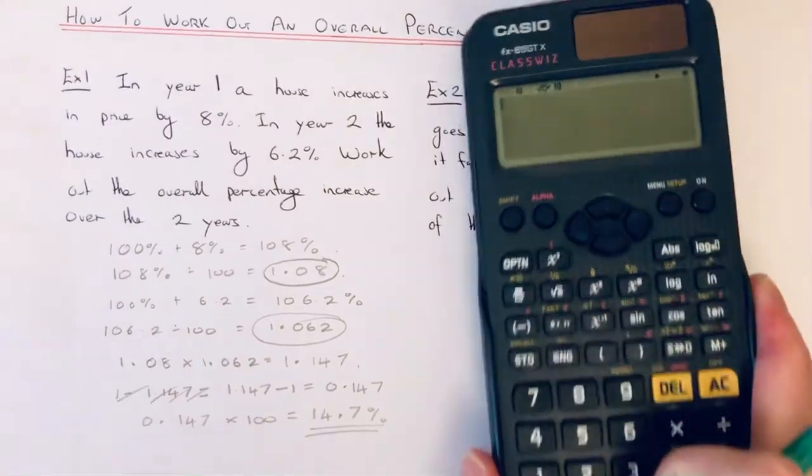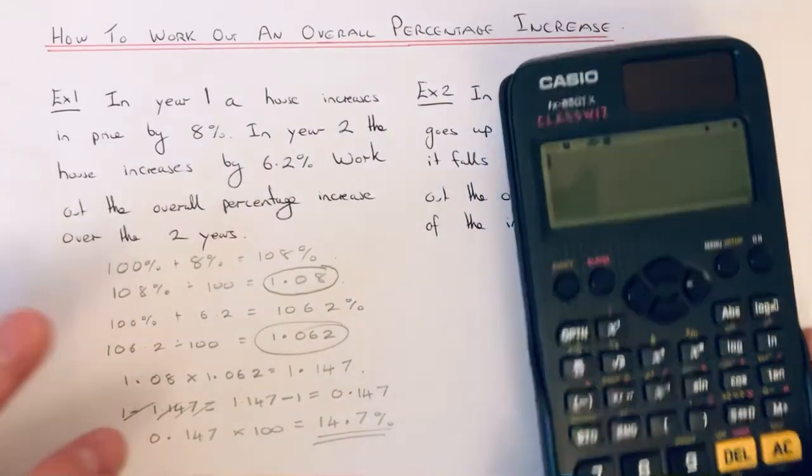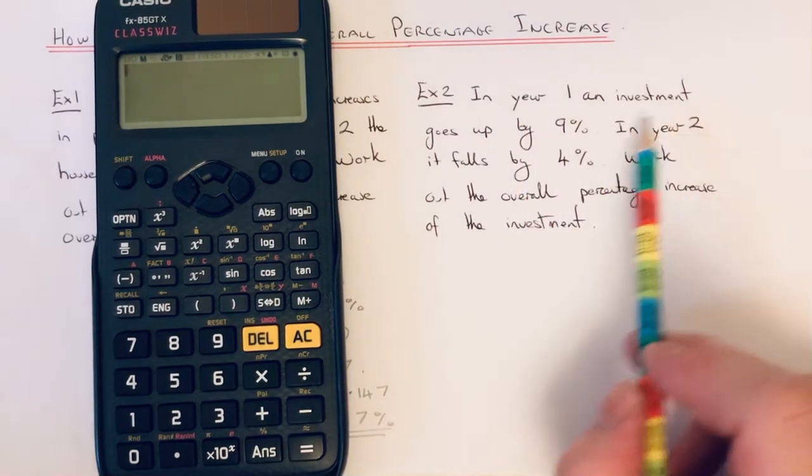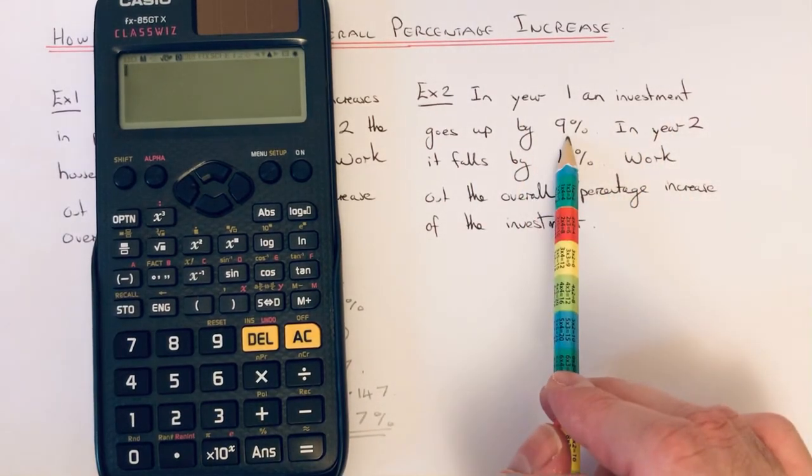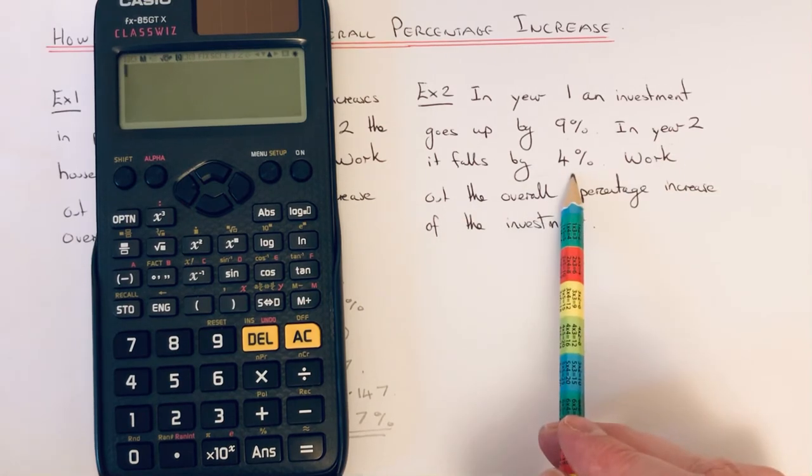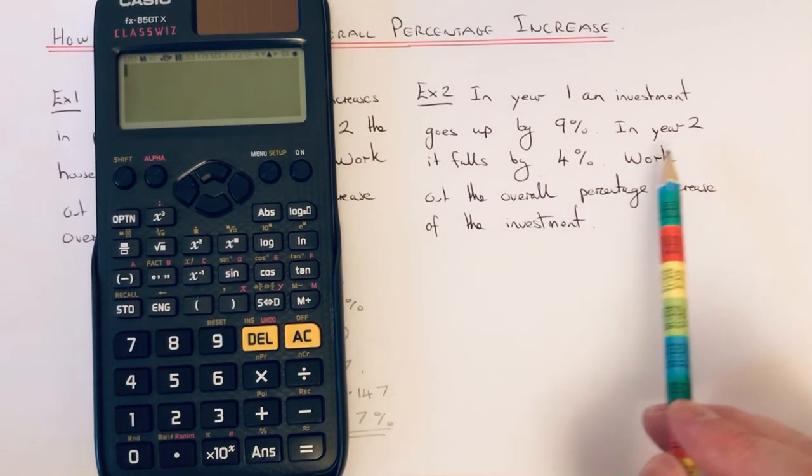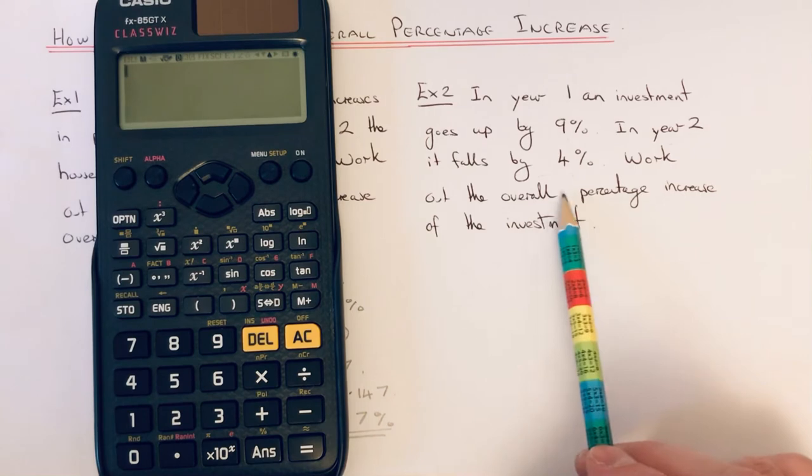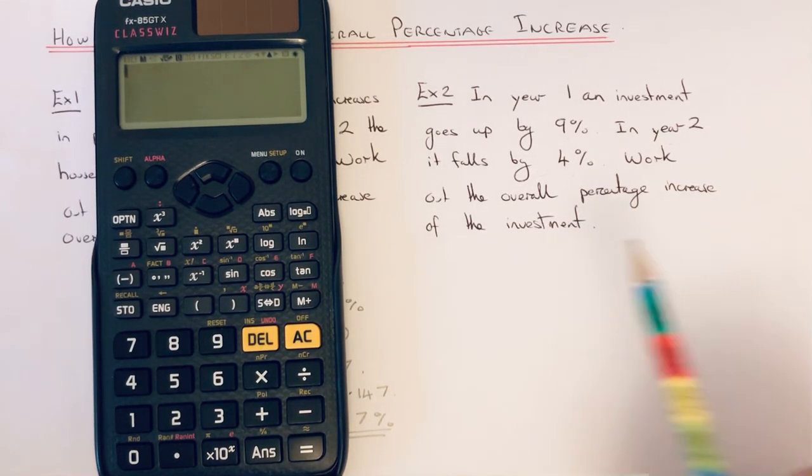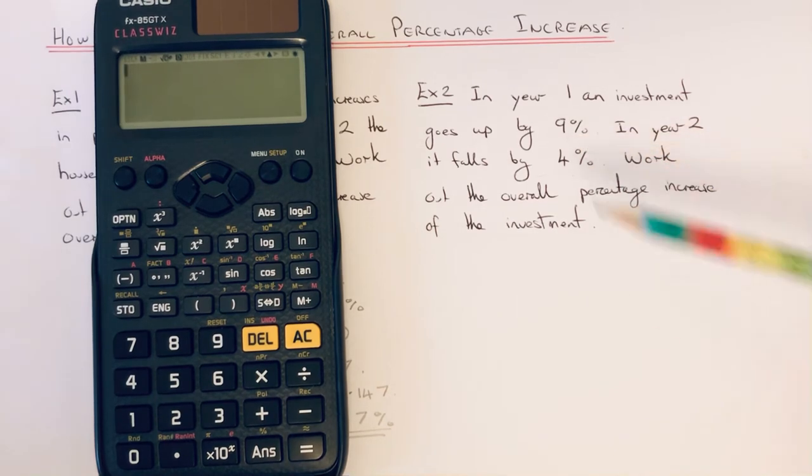Let's move on to Example 2. In year 1, an investment goes up by 9%, and in year 2 it falls by 4%. So we've got a decrease here as well. We're going to work out the overall percentage increase of the investment. Again, what you don't do is just do 9 take away 4, which is 5. That won't work.